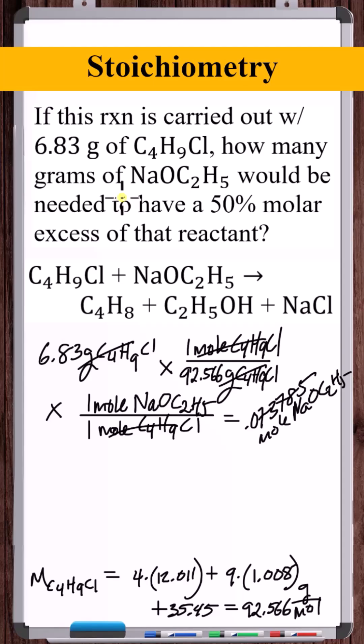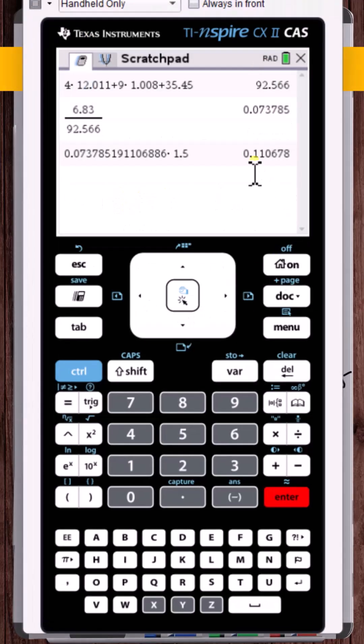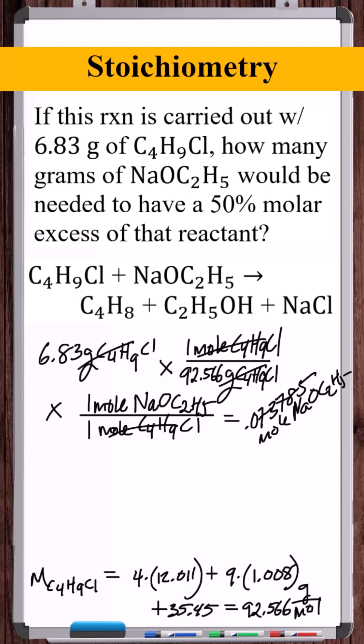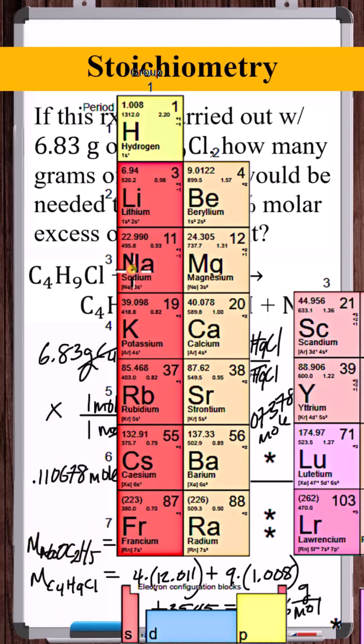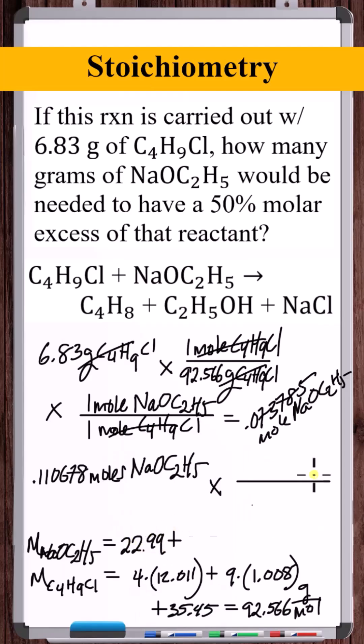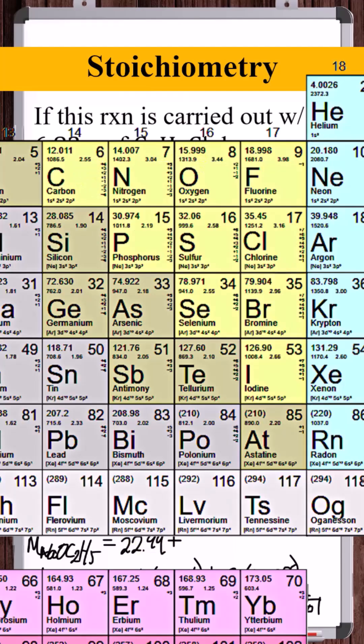But they're asking for this in grams, so we just need to convert this to grams: 0.110678 moles of NaOC2H5. Now we need to get the molar mass. One sodium atom, 22.990. One oxygen atom, 15.999.